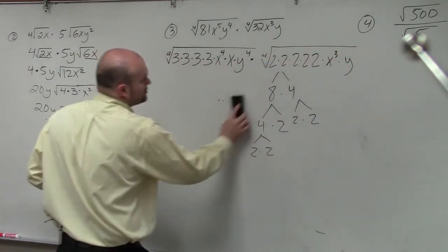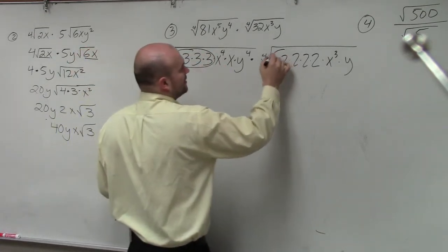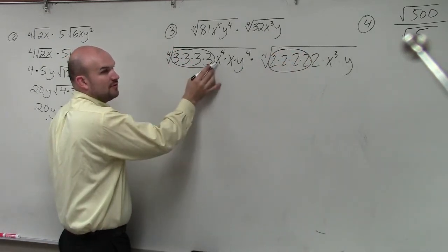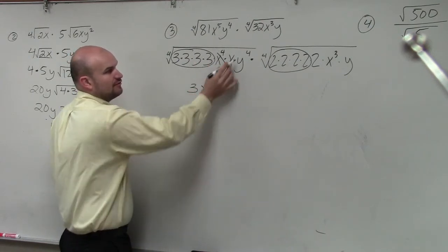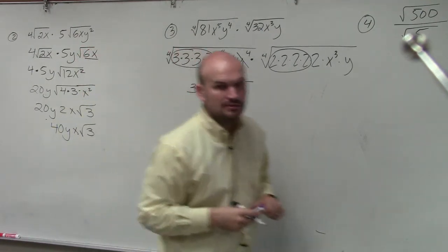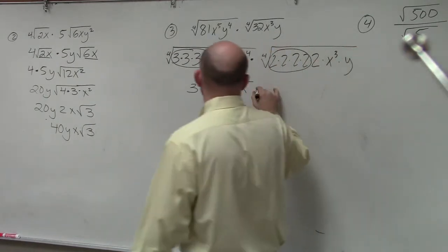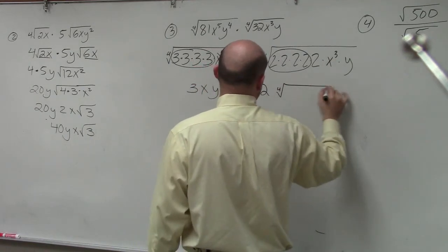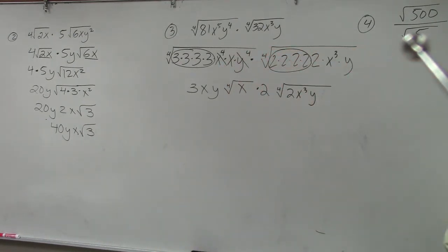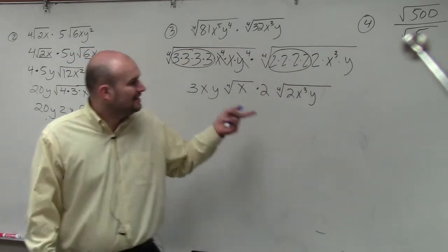So as you guys remember, if you like using factorization — I have four of them here, four of them here, four of them here. The fourth root of 2 times 2 times 2 times 2 is 2. And then I have the fourth root of 2x cubed y. Does everybody see how I simplified them? It's just basically two separate problems — that's all you guys are doing. Now we multiply.